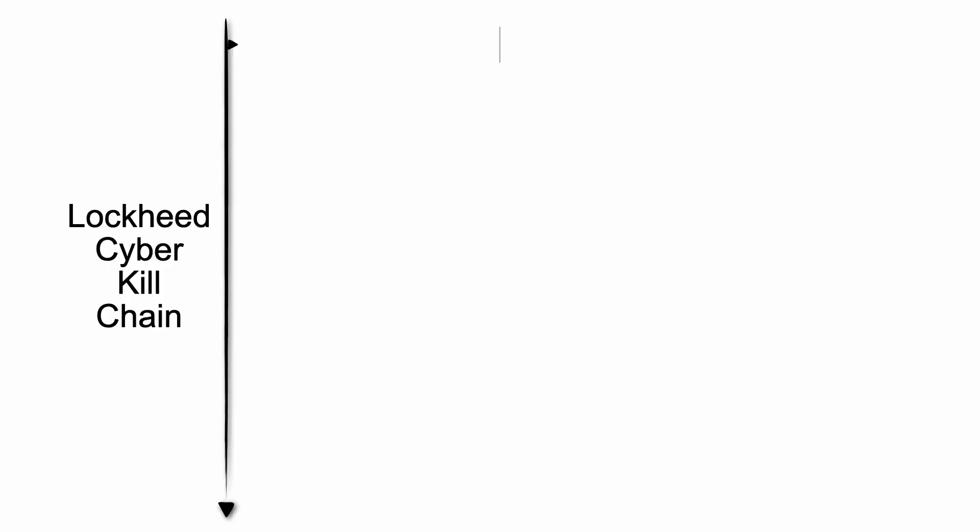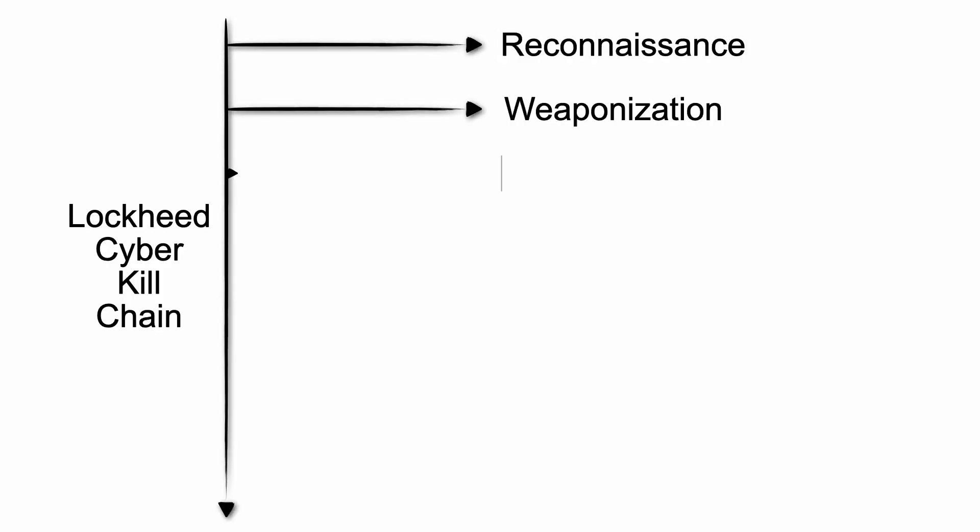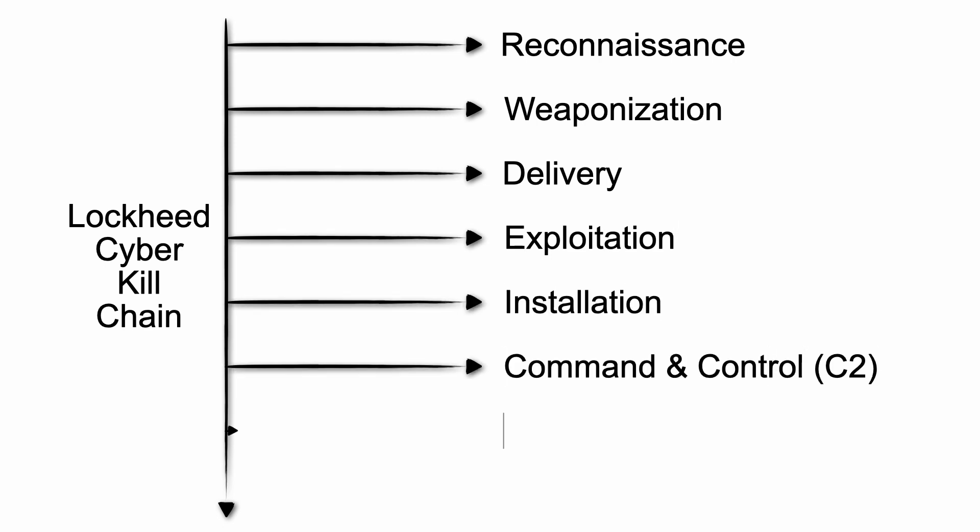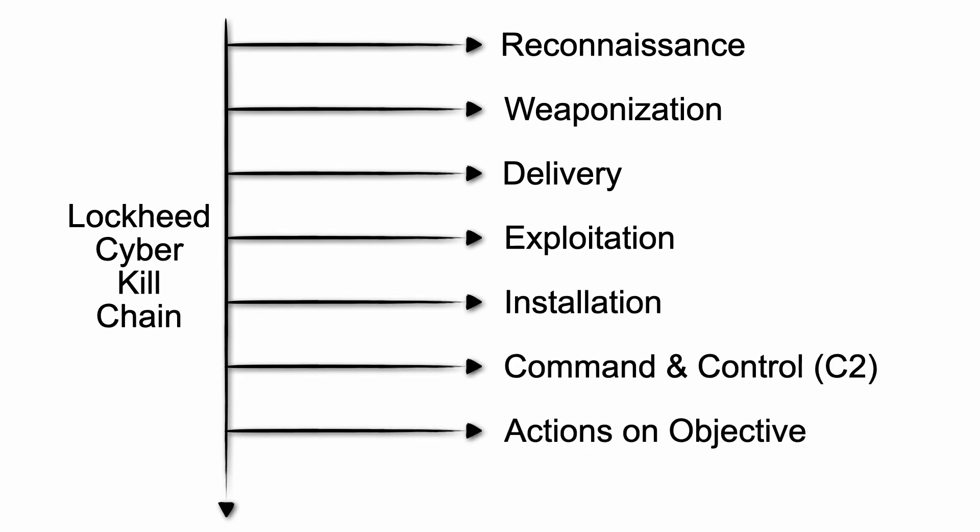That led to the creation of the cyber kill chain within Lockheed, which is now used amongst cyber professionals more broadly. This chain is comprised of seven pieces: reconnaissance, weaponization, delivery, exploitation, installation, command and control (C2), and actions on objective. Let's dive into every single phase, and once we're done I'll make some caveats about the cyber kill chain that you should be aware of.